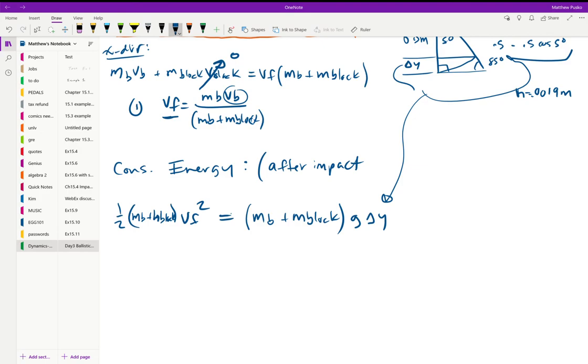Getting rid of common terms, we can say the velocity final is equal to the square root of 2g delta y.